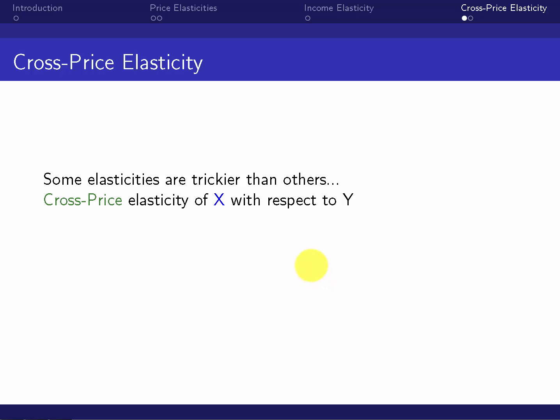Now, cross-price elasticities can be a little bit tricky. They're usually phrased cross-price elasticity of good X with respect to Y. What does cross-price even mean? It's not an own price. So we're looking at a quantity of X, but we're not looking at the price of X. We're looking at the cross-price, the price of something else, the price of this other good Y.